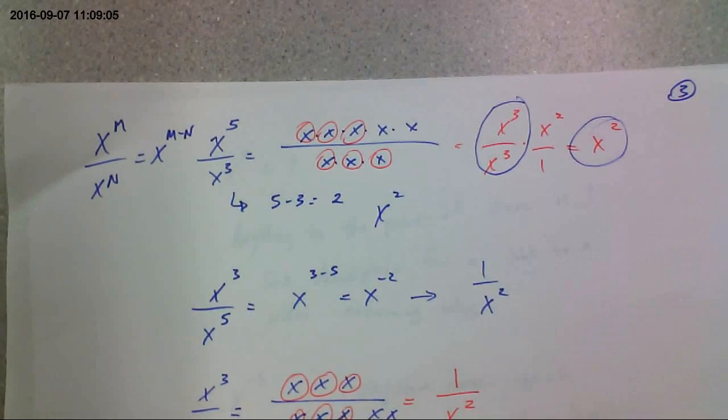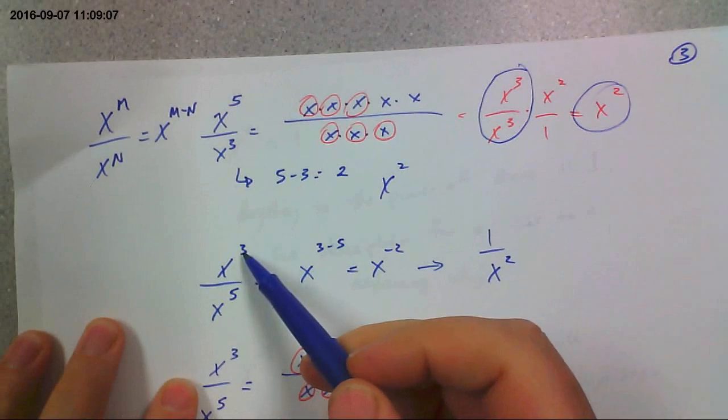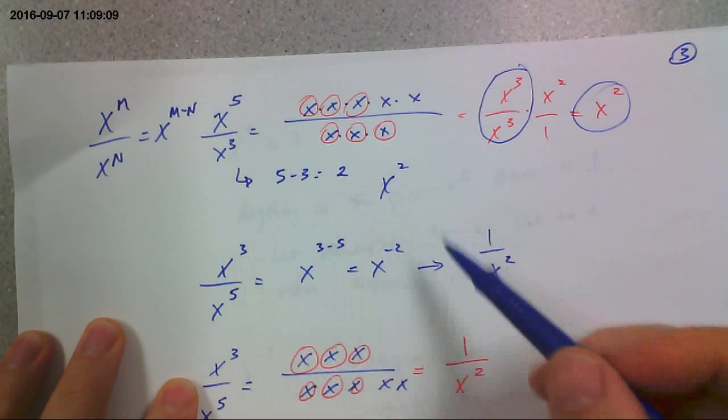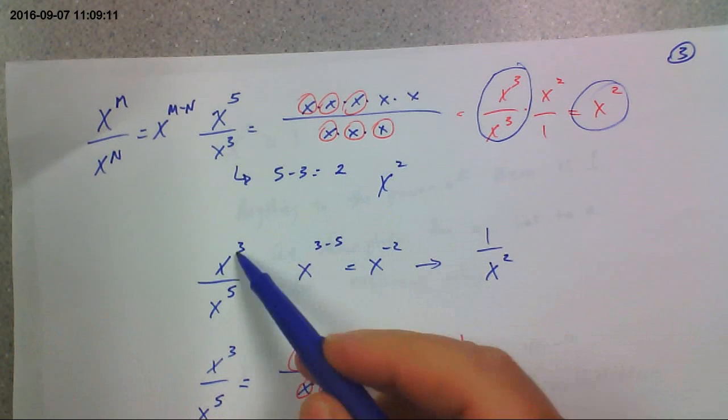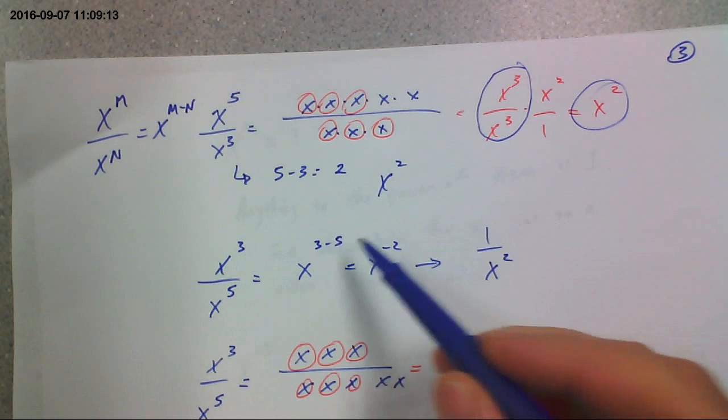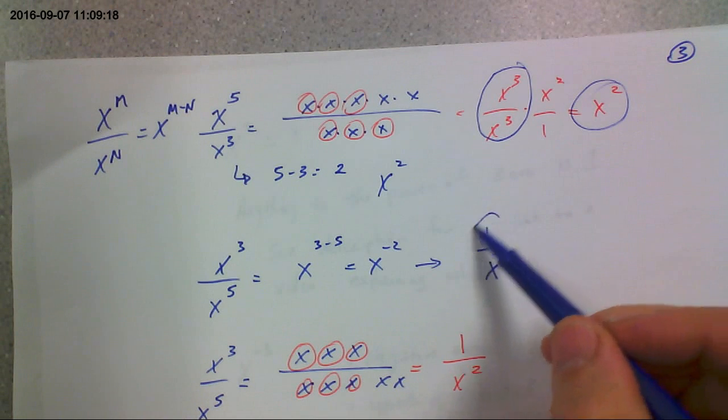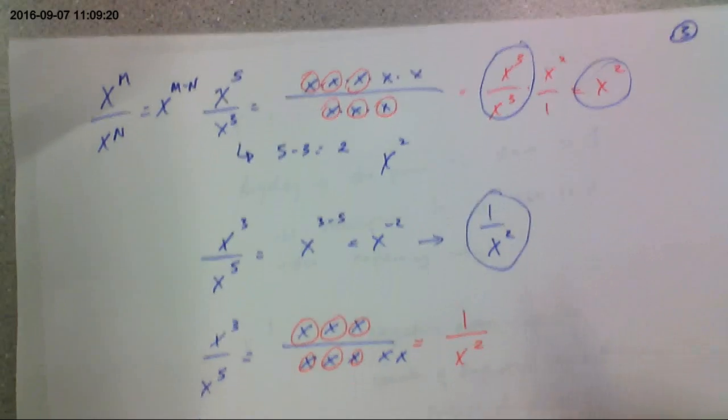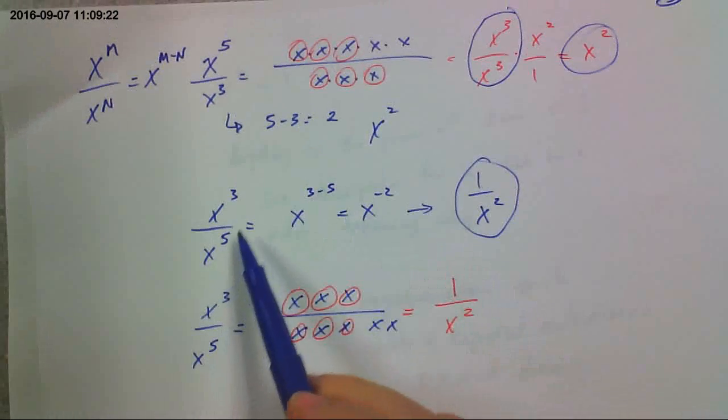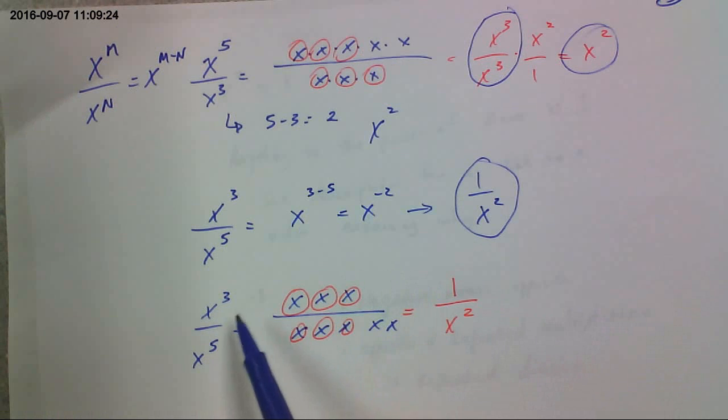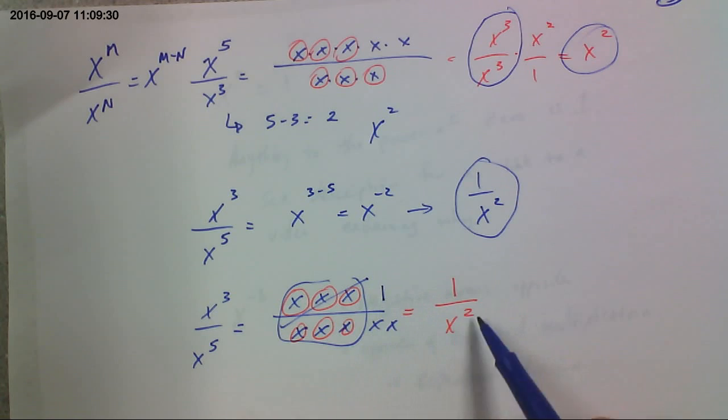No trouble there, but where you get in trouble is if it's the other way around. If the numerator has a smaller exponent, you end up with a negative. Because 3 minus 5, you have to do the numerator minus the denominator. 3 minus 5 is negative 2. It turns out negative exponents are division. It's reciprocal. We'll get to that in just a moment. If I were to write this out the way I did the first example, though, it's a little easier to see. See x cubed, x cubed, x cubed divided by itself is just 1, and you're left with 1 divided by x squared. Okay.